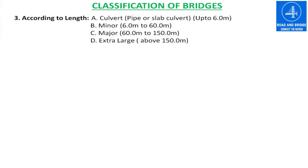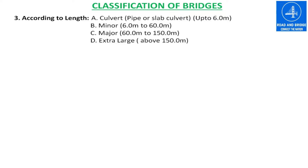According to the length of the bridge, it can be classified into four groups: culverts, minor bridge, major bridge, and extra-large bridge. The length of up to 6 meters is called a culvert.